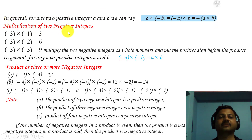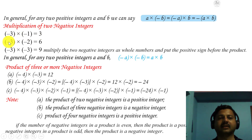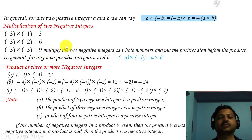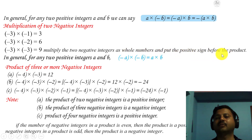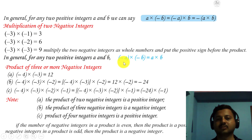Now, multiplication of two negative integers. Minus 3 into minus 1: minus into minus is plus, and 3 ones are 3, so the product is 3. Also, minus 3 into minus 2: minus into minus is plus, 3 twos are 6. And minus 3 into minus 3: minus into minus is plus, 3 threes are 9. Multiplying two negative integers — multiply them as whole numbers and put a positive sign before the product. In general, for any two positive integers a and b: minus a into minus b equals a into b.